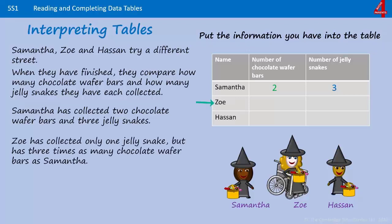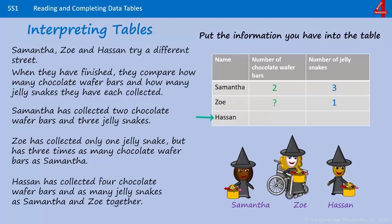Zoe has collected only one jelly snake so we put one under jelly snakes next to Zoe's name, but she has three times as many chocolate wafer bars as Samantha. I'll put a question mark there for now because there might be some more information I'll need. Hassan has collected four chocolate wafer bars so I can put that next to Hassan beneath the chocolate wafer bars, and as many jelly snakes as Samantha and Zoe together, so I'm going to put a question mark there.